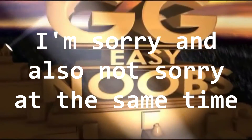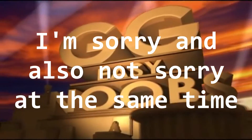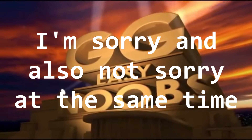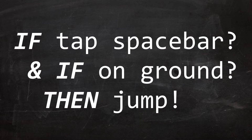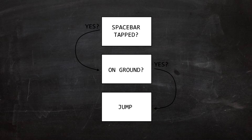For the text version of pseudo code, it's really easy to create — it's basically just typing what you think. If we want to jump when we hit spacebar and if we are on the ground, we just type that out with a syntax of code. So with the syntax of code it just looks like this: if tap spacebar and if on ground, then jump.